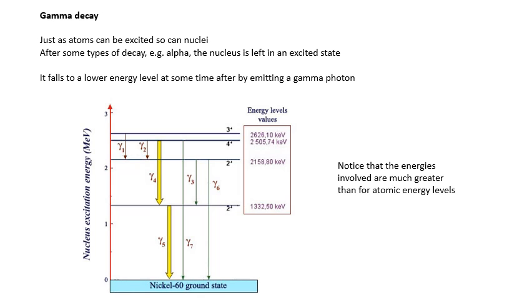So, nuclei have energy levels as well. This is an energy level diagram for nickel-60, apparently. One thing to notice is that the amounts of energy involved are much greater than for atomic energy levels. If we look at these, this one here, that's, you know, we're talking mega electron volts. That's two MeV there. That's two and a half MeV. That's two point six MeV. With the atomic ones, it was only kind of, you know, about seven, eight, whatever electron volts. This is millions of electron volts.